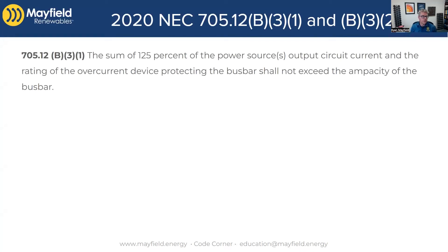The first one is 705.12 B31. What this is saying is that we're going to take the sum of 125% of the power source output circuit current and the rating of the overcurrent device protecting the bus bar, and those two shall not exceed the ampacity of the bus bar. We're going to take the inverter output circuit, multiply it by 125% — that becomes the amount of current the bus bar will be subject to — add that to the overcurrent device protecting the bus bar. If those two don't exceed the bus bar rating, then you can put the solar output breaker wherever you want on that bus bar.